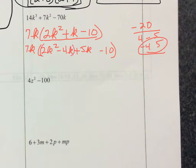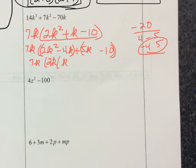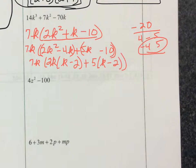Now we have four terms, so we'll do grouping. The 7k is always part of our answer. Out of 2k squared and minus 4k, we can factor out 2k, leaving k minus 2. Out of 5k minus 10, we factor out 5, leaving k minus 2. Since both parentheses match, we get factors of k minus 2 and 2k plus 5. So the full factored form is 7k times (k minus 2) times (2k plus 5).